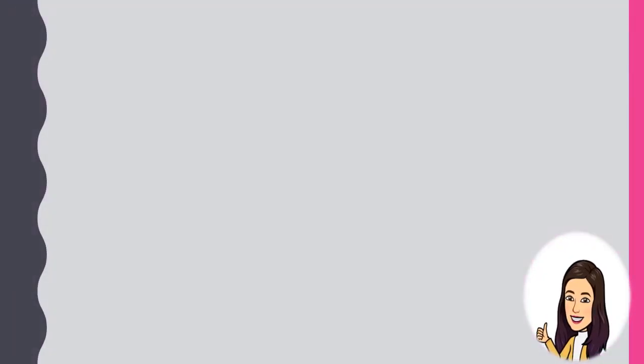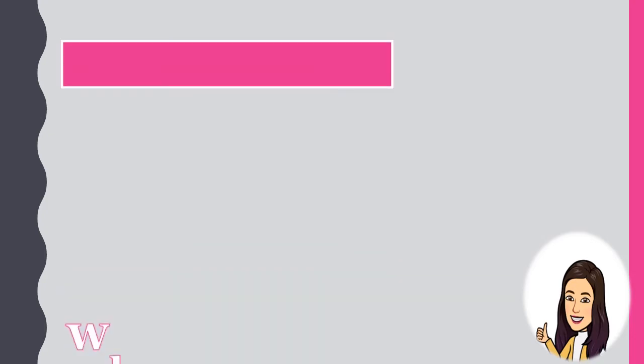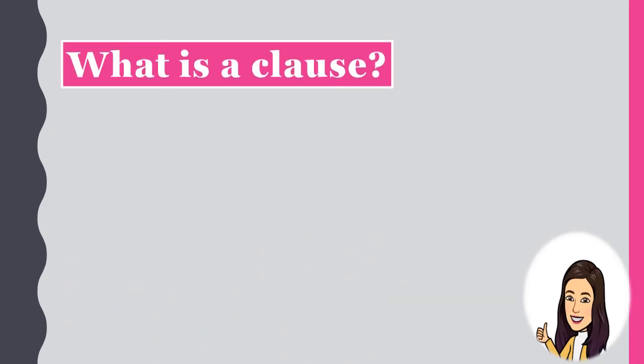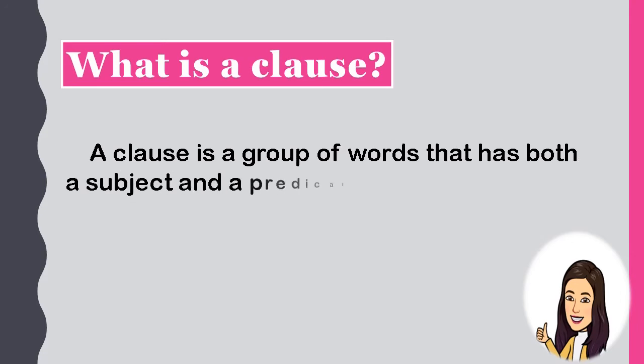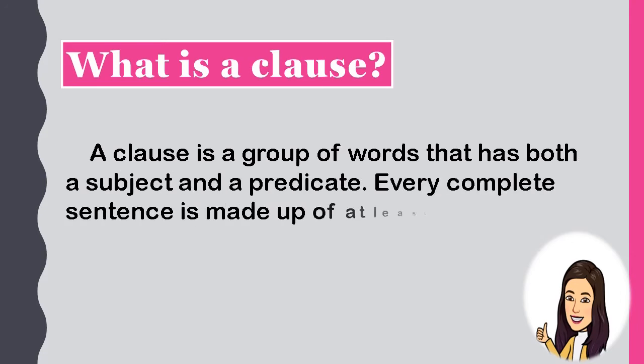A subordinating conjunction is used to connect clauses. Let's identify first: what is a clause? A clause is a group of words that has both a subject and a predicate. Every complete sentence is made up of at least one clause.